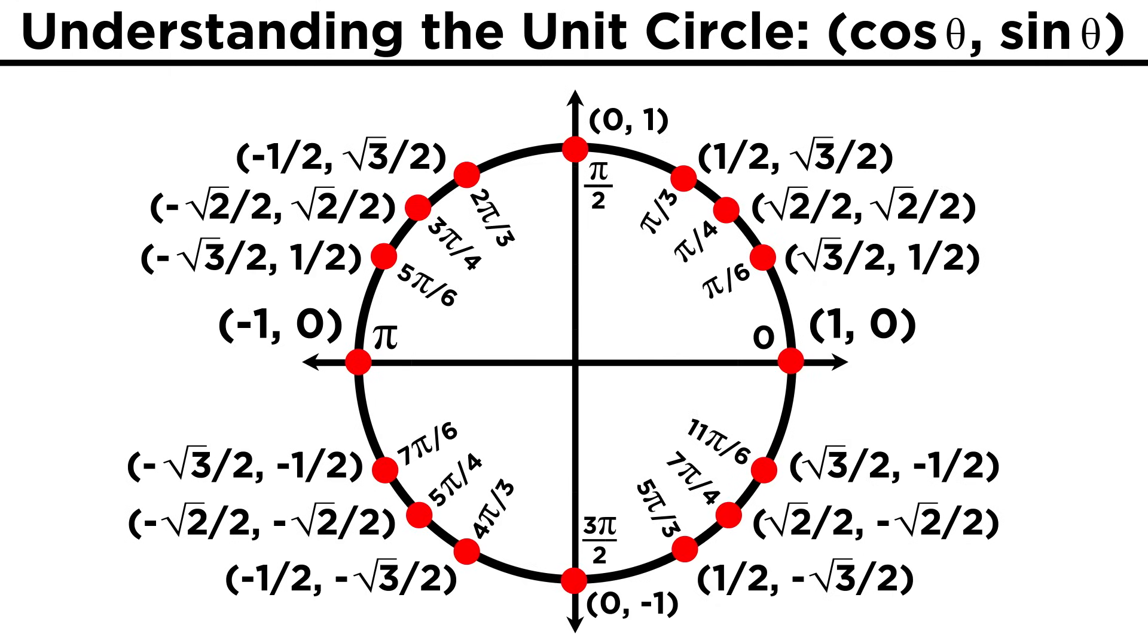Knowing this, we could take any of these angles, and immediately know the sine and cosine, simply by visualizing the unit circle. Take 4π/3, for example. To get the sine of this angle, we simply locate the angle, which can also be thought of as this reference angle, or π/3, but in quadrant three.